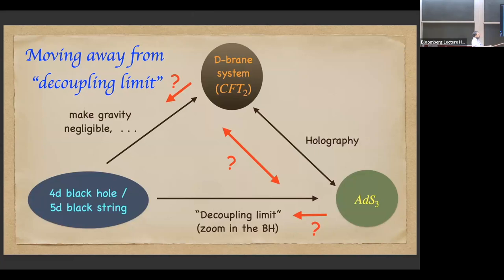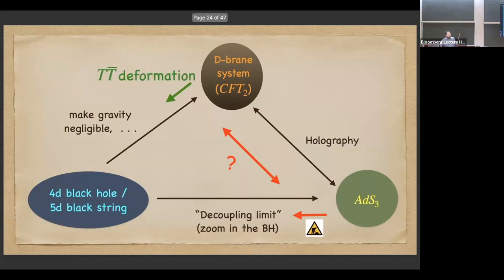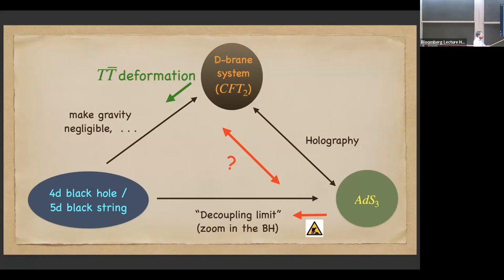Coming back to the questions we pose: what happens if we move away from the decoupling limit? What happens to the field theory description, the geometric side, and their duality correspondence? The picture we propose is that on the field theory side, this amounts to deforming the CFT by the TT-bar deformation. As one audience member asked: turning gravity back on would correspond to the TT-bar deformation — and yes, that is our proposal.